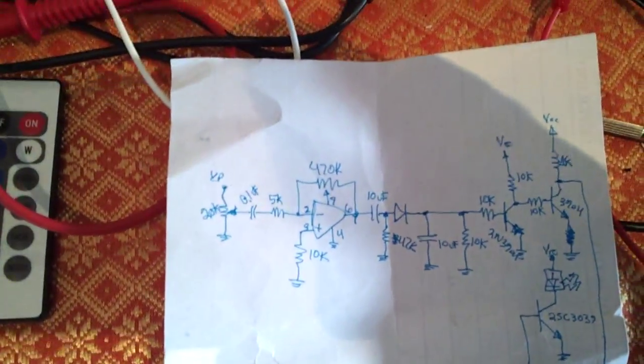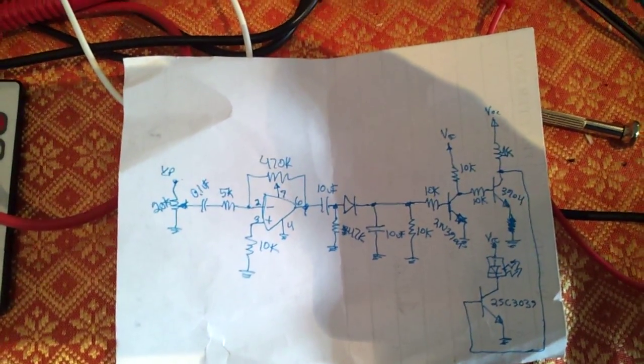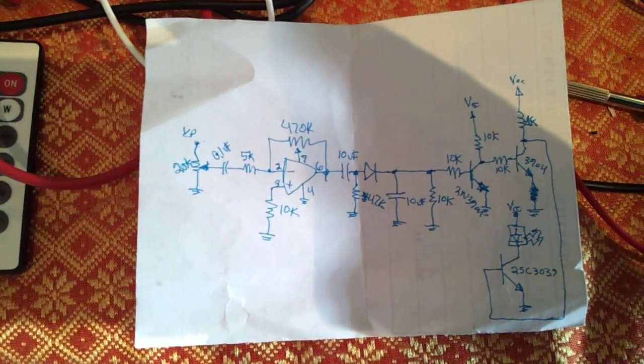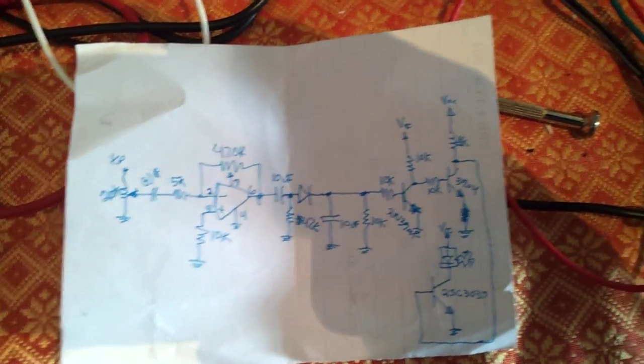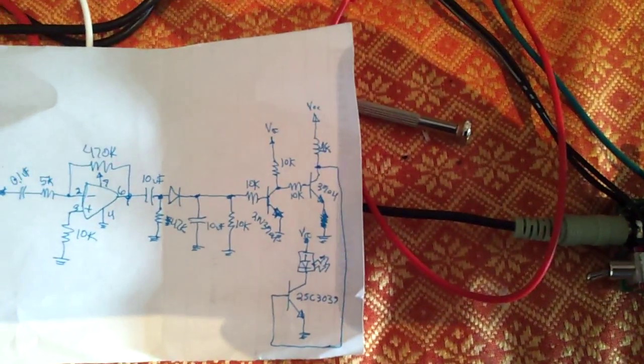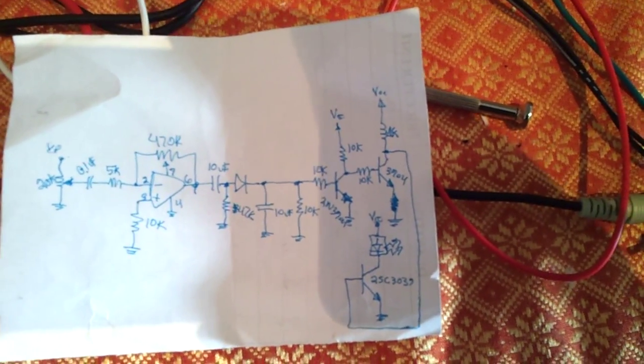So back to this thing here, which is the sound system. Obviously got the input, I buffer it, give it a boost by 50 times with a pot at the input to adjust volume. Then I turn it into an integrator and then basically a switching circuit.